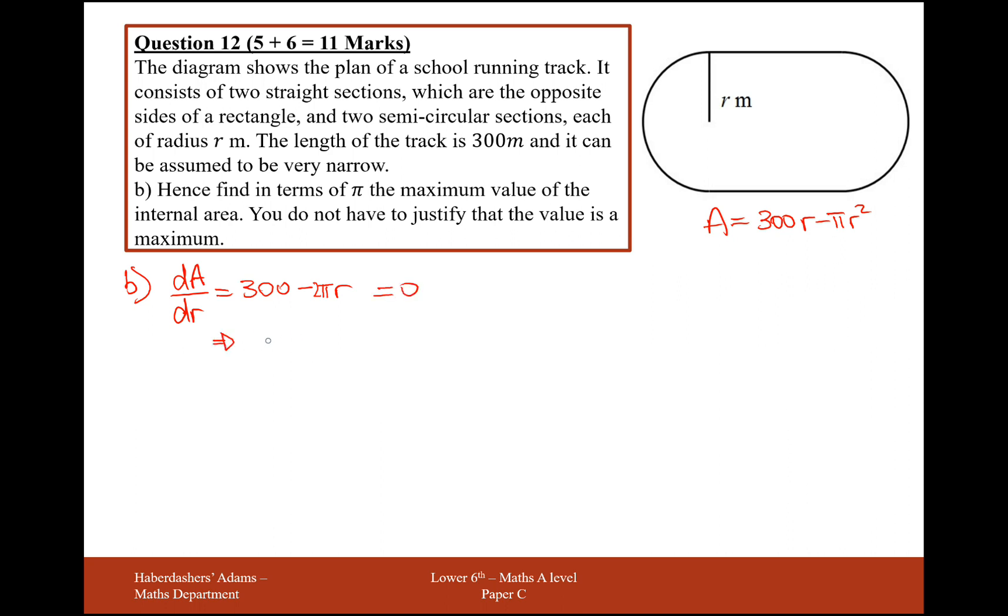So from here, we're going to get 300 equals 2πr. And dividing through by 2π, we're going to get 150 over π. So the radius when we maximize the area is going to be 150 over π.